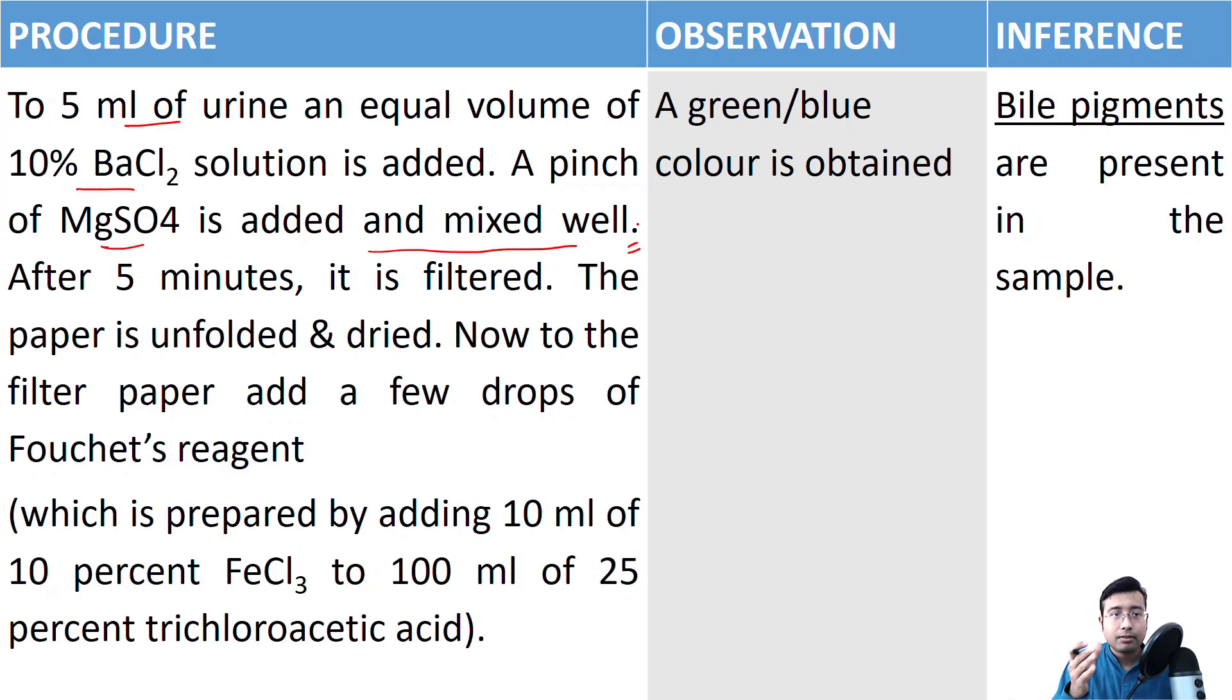Now, here is a caveat. In many institutes, magnesium sulphate is often pre-mixed with urine samples to prevent this extra step. So often depending on what institute you are studying, there will not be magnesium sulphate that will be provided separately. So how will you understand? The moment you add barium chloride to urine, if you get a thick white precipitate, it means sulphate is already present in the urine sample.